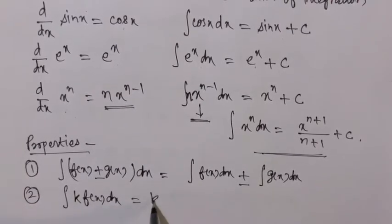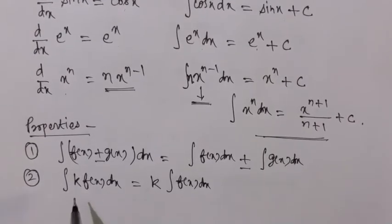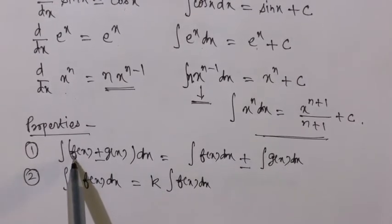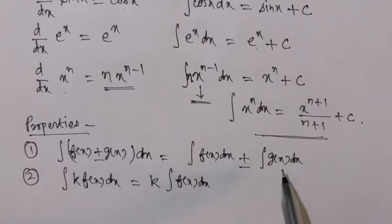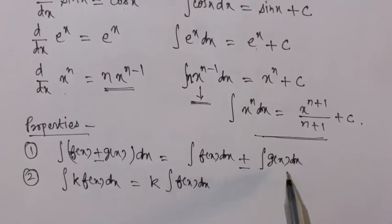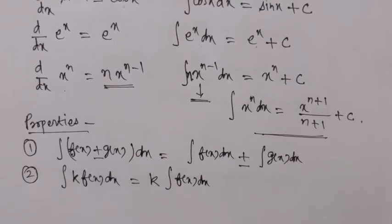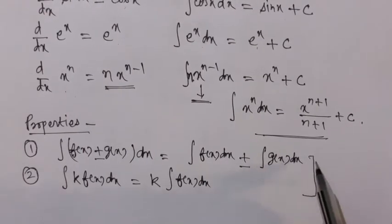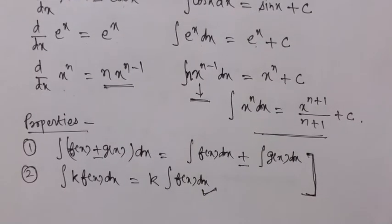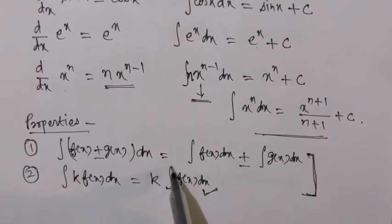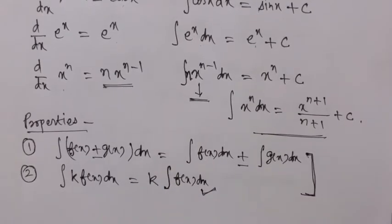The second property: if you have k·f(x) to integrate, you can take k outside and integrate f(x) dx separately. So if a function is multiplied by l and another by m, take l out and integrate that function, take m out and integrate the other, then add or subtract as needed.